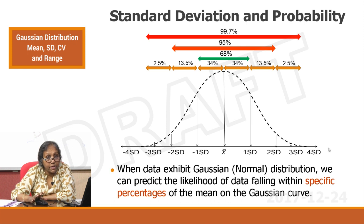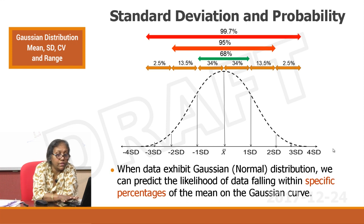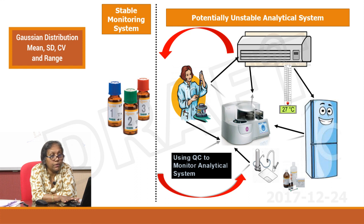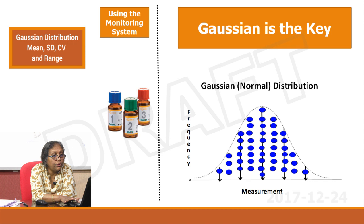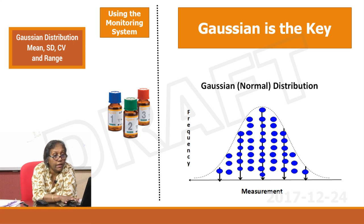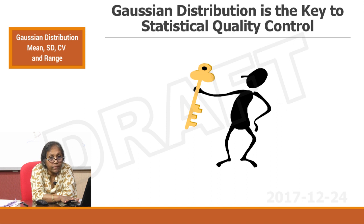This is the key to the quality control process. You are looking at a potentially unstable analytical system and monitoring it using quality controls. The key to the quality control system is the Gaussian or normal distribution. To drive home that point: Gaussian distribution is key to the statistical quality control process.